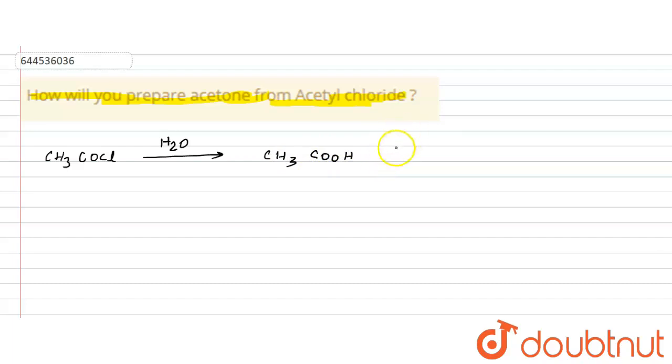Now if you treat this acetic acid with calcium hydroxide, Ca(OH)2, you get the salt, that is the calcium acetate salt, and you get (CH3COO)2Ca. This is calcium acetate salt.